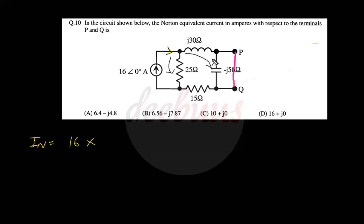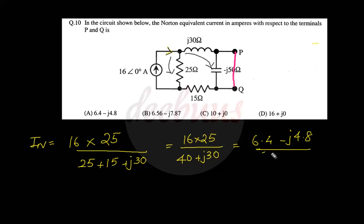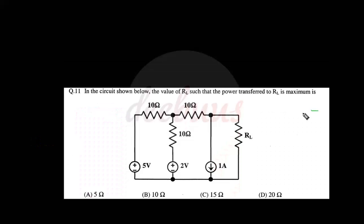We have to calculate the current flowing through the j30Ω series with 15Ω branch. Applying current division rule: 16 into opposite branch resistance, that is 25, divided by total resistance 25 plus 15 plus j30. That is 16 × 25 divided by 40 + j30. On calculating, we obtain 6.4 − j4.8. So answer is (a).